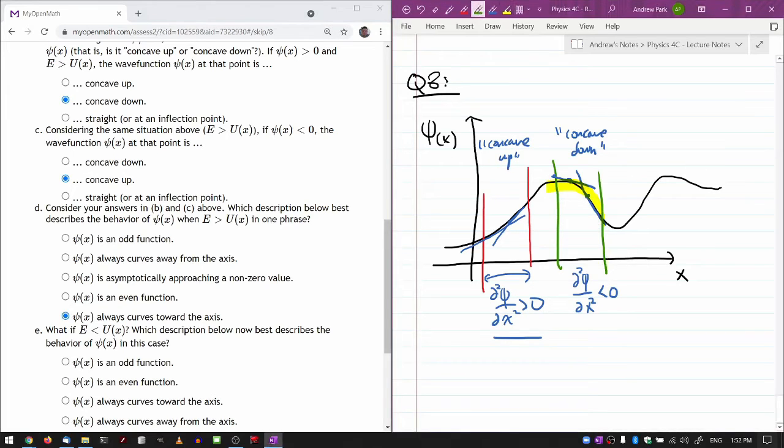When you look at this portion of the curve, it's concave down—it's curving towards the axis. Imagine that this wave function somehow went beyond the axis. Then, as we described in C, this would be concave up, so it's again curving towards the axis.